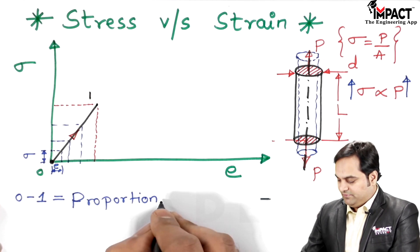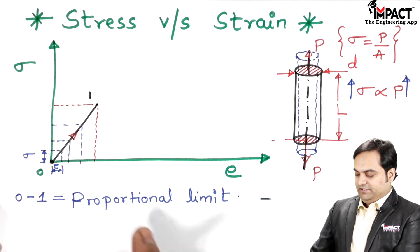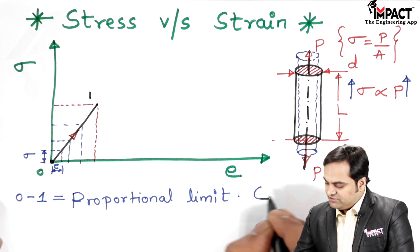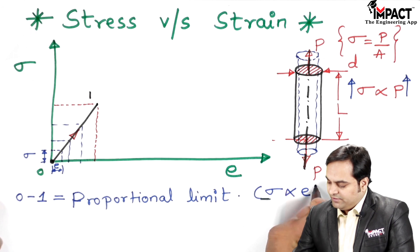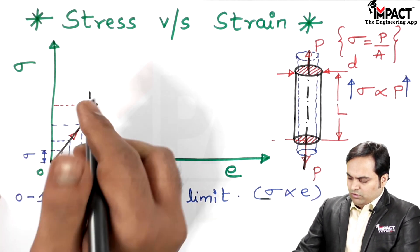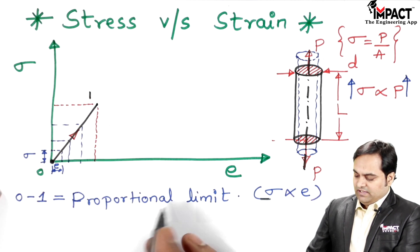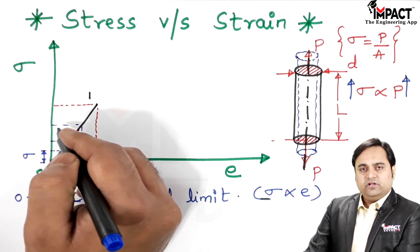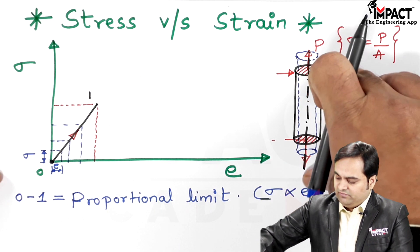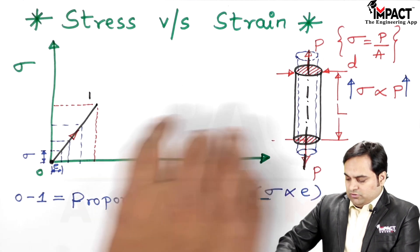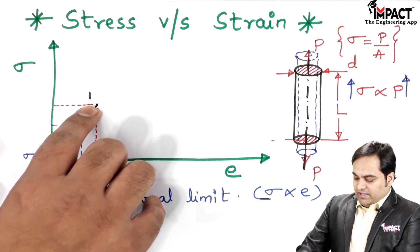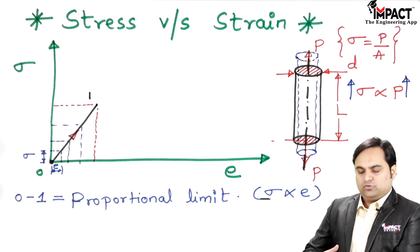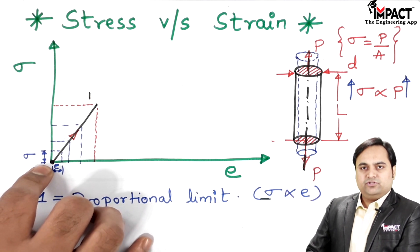After the proportional limit, there will be an elastic limit. From 0 to 1 it indicates the proportional limit, meaning stress is directly proportional to strain, obeying Hooke's law. When we reach 0.1 where the proportional limit is complete, and when the load is removed, stress becomes zero, meaning the material will regain its original shape and size. Whatever strain was inside the material is also eliminated and we get the material back to its original position.